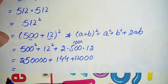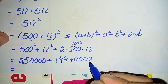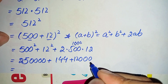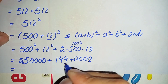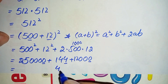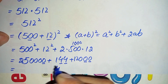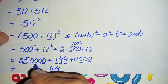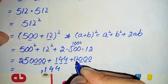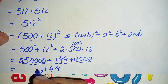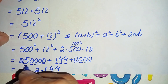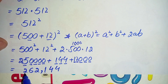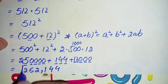Now we add all three numbers together. We start from the ones position, then tens, hundreds, and thousands. Adding 250000 plus 144 plus 12000: the digits combine to give us 262144. So finally, 262144 is our answer.